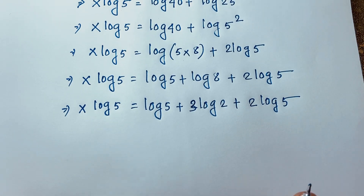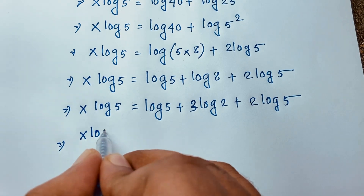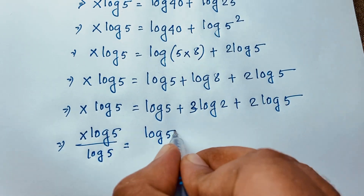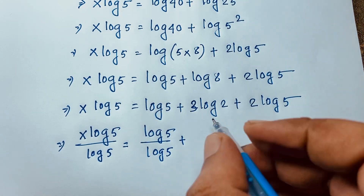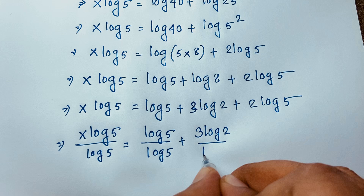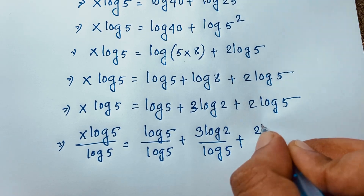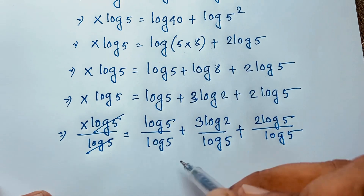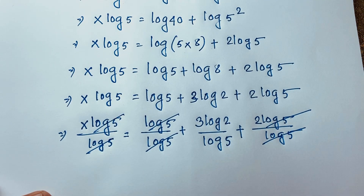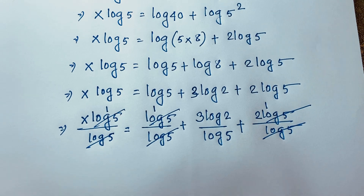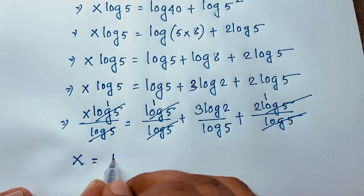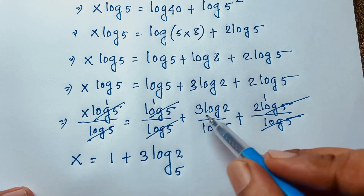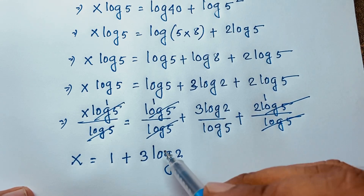I divide both sides by log 5. On the left, log 5 cancels out leaving x. On the right, log 5 over log 5 cancels to 1, the 2 log 5 over log 5 cancels to 2, and 3 log 2 over log 5 becomes 3 log₅2. So x equals 1 plus 3 log₅2 plus 1.